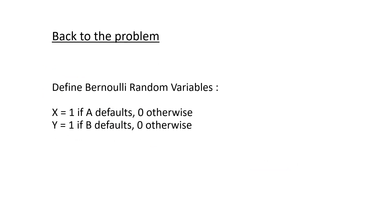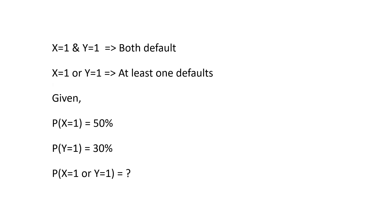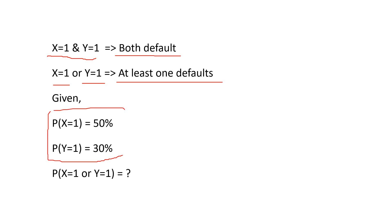Coming back to our problem, we define two Bernoulli random variables X and Y. X equals 1 if bond A defaults, 0 otherwise, and Y equals 1 if bond B defaults, 0 otherwise. The event X=1 and Y=1 means both bonds default; X=1 or Y=1 means at least one bond defaults. We are given that P(bond A defaults) = 50% and P(bond B defaults) = 30%, and we need to find the probability that at least one bond defaults, denoted P(X=1 or Y=1).